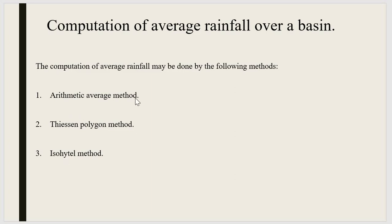The first method is the arithmetic average method, the second is the Thiessen polygon method, and the third is the isohyetal method. We will see each one by one.